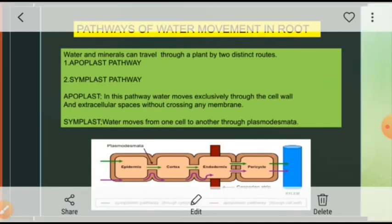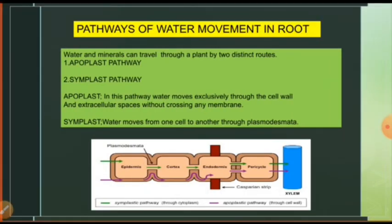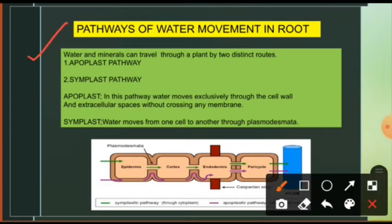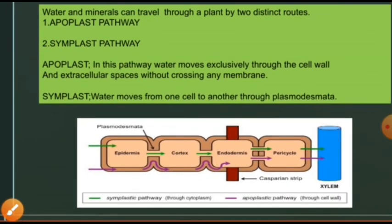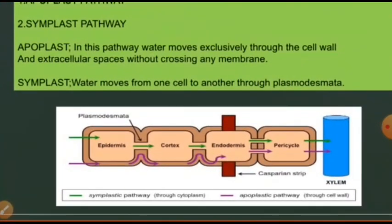Next, water and minerals travel through a plant by two distinct pathways. One is known as the apoplast pathway and the second is known as the symplast pathway. There is also another pathway called the transmembrane pathway, but the NCERT explains two pathways — apoplast and symplast. So I will explain these two pathways.